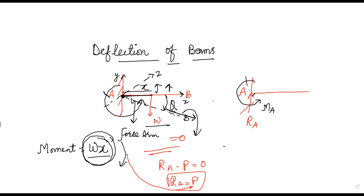In a cantilever beam, at the fixed end we have two reactions: the force reaction RA and the moment reaction MA. RA prevents translational motion in the beam, and MA prevents rotational motion. The function of the supports is to generate reactions — moment reactions and force reactions — to nullify the effect of the external forces.